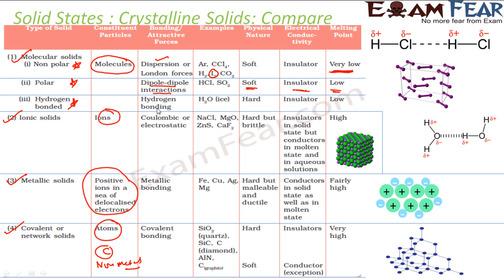We talk about the hydrogen-bonded molecular solids — for example water in the ice form. They are hard because the force of attraction from hydrogen bonding is more, but not that much, so their melting point is also low and they are also insulators.